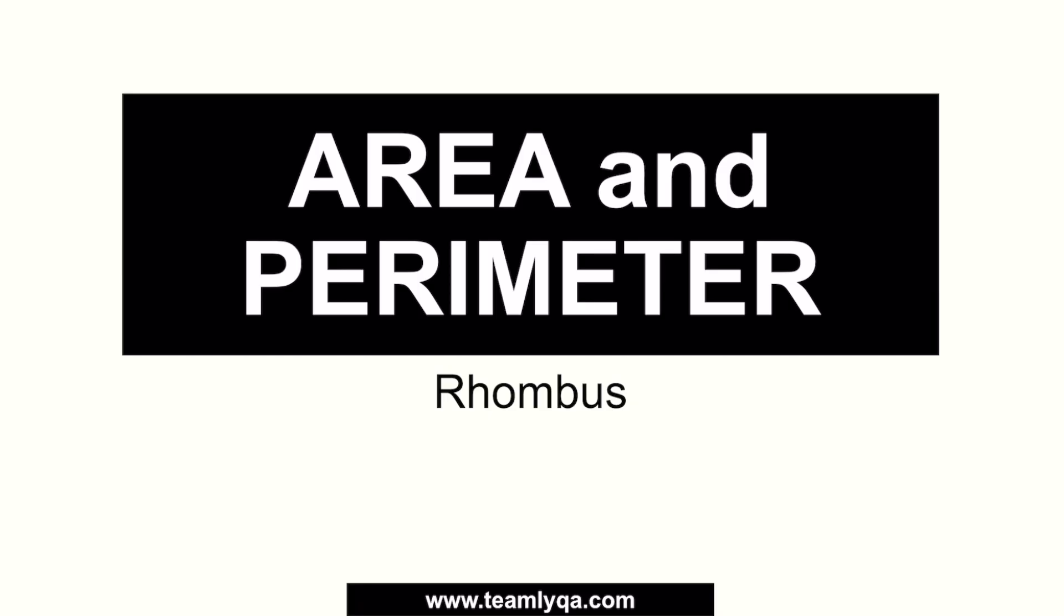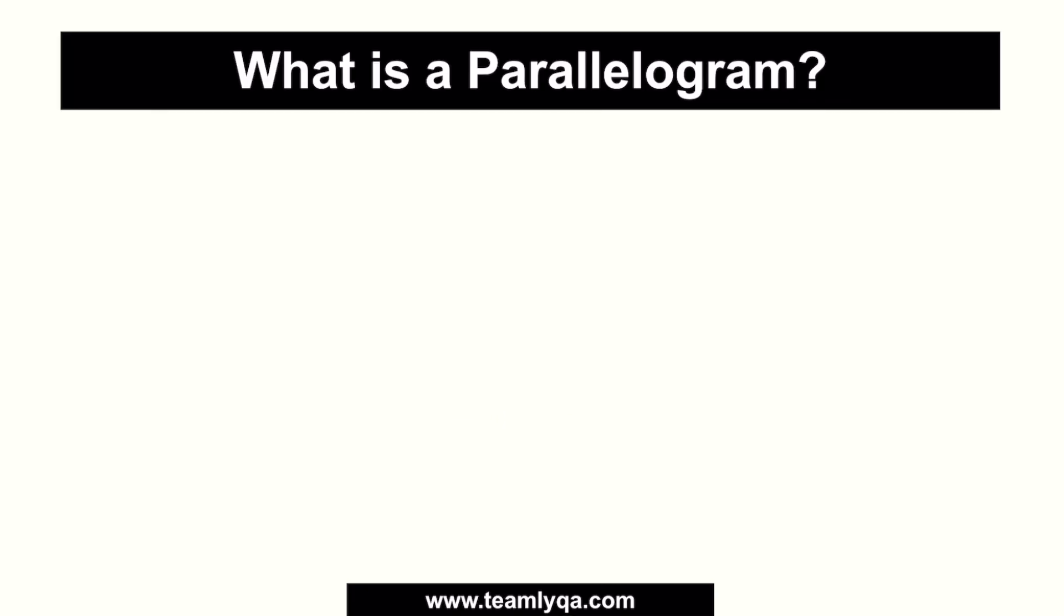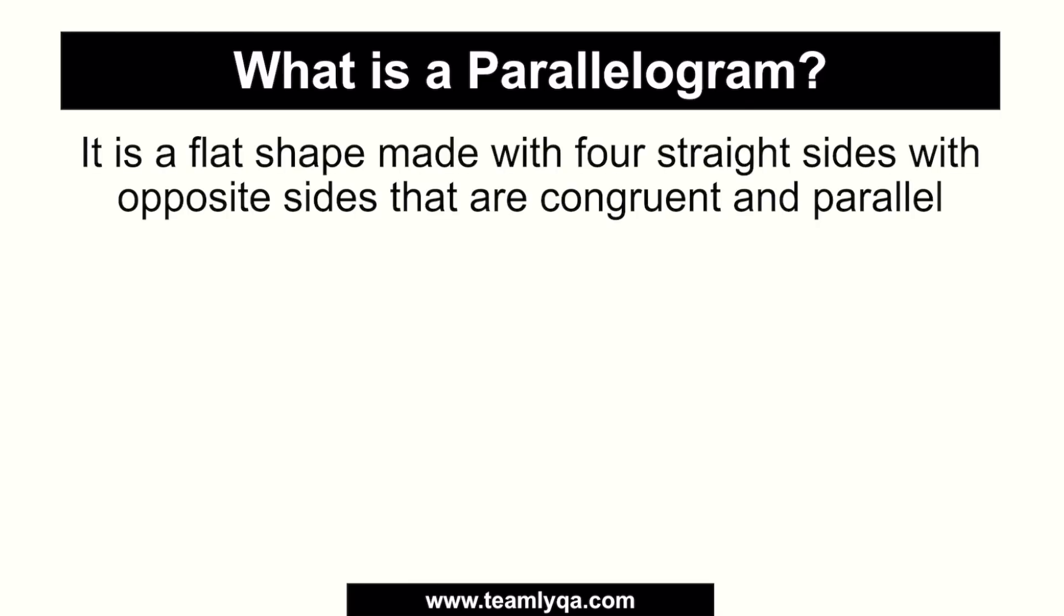Alright, so this is our lecture on area and perimeter ng rhombus. And before we dive into the formula for that, we're going to do a quick review of our lesson last time about parallelograms. Why? Because the definition of parallelogram, which is it's a flat shape made with four straight sides with opposite sides that are congruent and parallel, are also true for the rhombus. Congruent, as a reminder, means same size or same length, same measurement. And parallel means these are lines that will never intersect.